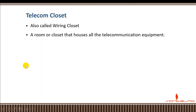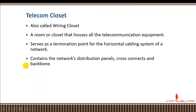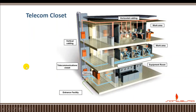The next area is the telecom closet or telecommunication closet, also known as the wiring closet or the distribution facility — or in some books, the intermediate distribution facility (IDF). This is a room or closet that houses all the telecommunication equipment, especially the switches that distribute the network over the infrastructure. It serves as the termination point for the horizontal cabling system and contains the network distribution panels, cross-connects, and backbone. In our building layout, the telecommunication closet distributes access to all the workstations and work area.